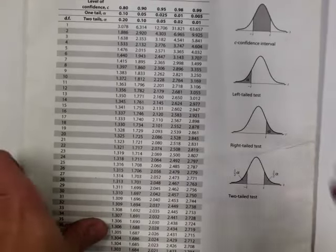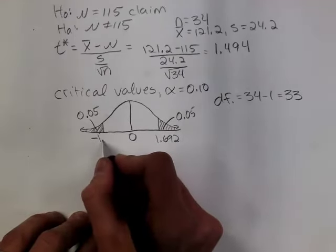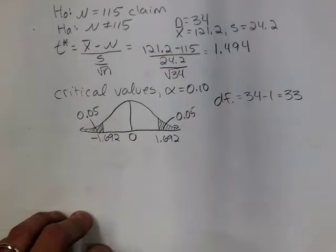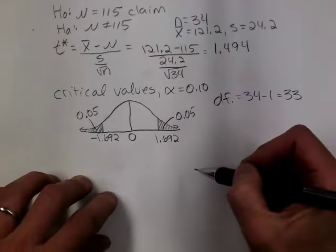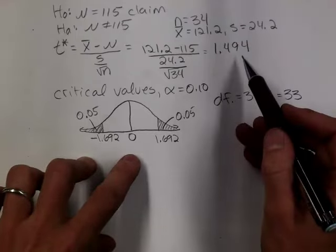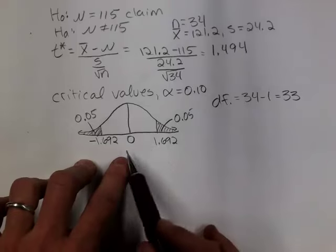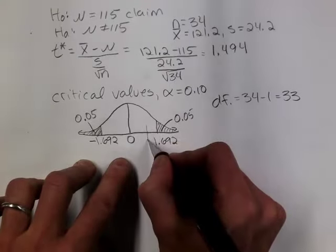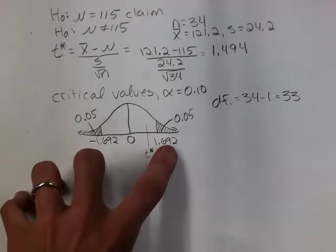The table gives only the positive value: 1.692. By symmetry, I also have a negative critical value of negative 1.692. Note: when we get to hypothesis tests about standard deviation or variance, we'll use the chi-square table and the two critical values will not be symmetric. My test statistic of 1.494 lies between negative 1.692 and 1.692, so it's in the fail-to-reject region.